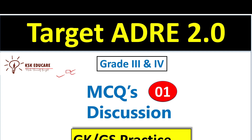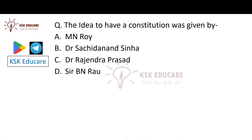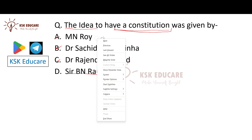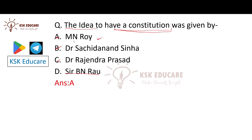Let's start the first question: The idea to have a constitution was given by — Option A is M.N. Roy, Option B is Dr. Satchidanand Sinha, Option C is Dr. Rajan Dattasad, Option D is Sir S.N. Rao. The idea to have a constitution was given by M.N. Roy.